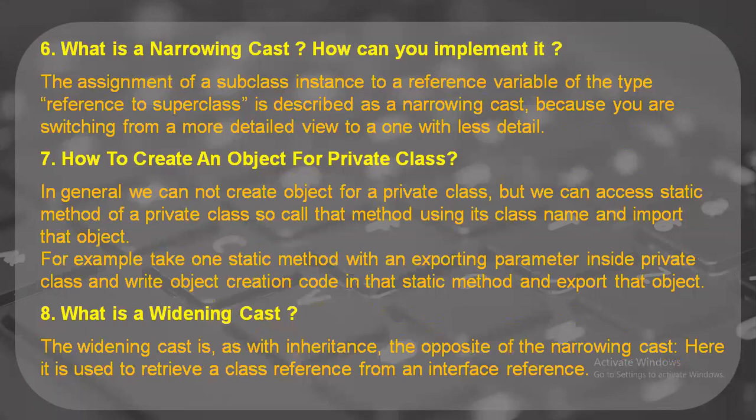How do you create an object for a private class? In most cases we cannot create an object for a private class, but we can still access a static method for it. Call the method using its class name and import the object. For example, take one static method with an exporting parameter inside the private class, write the object creation code within that static method, and then export the entire object.